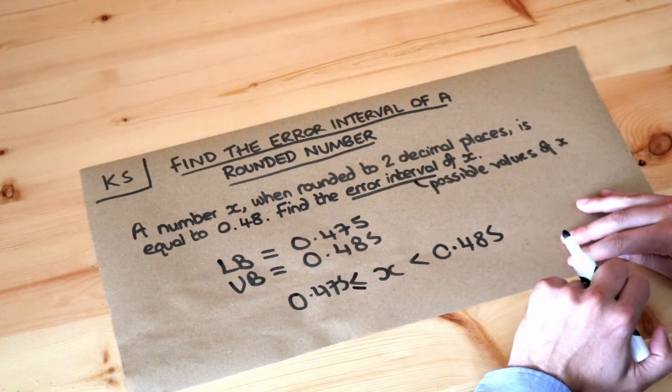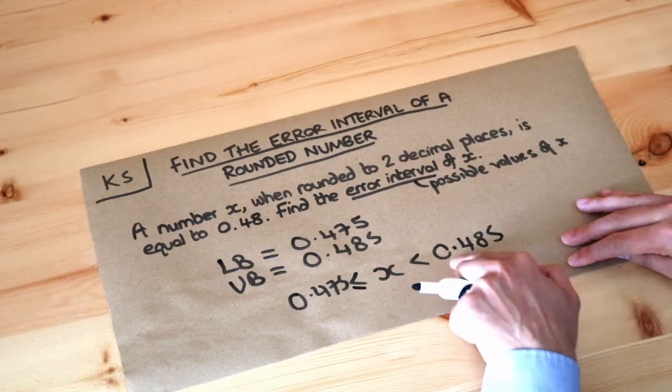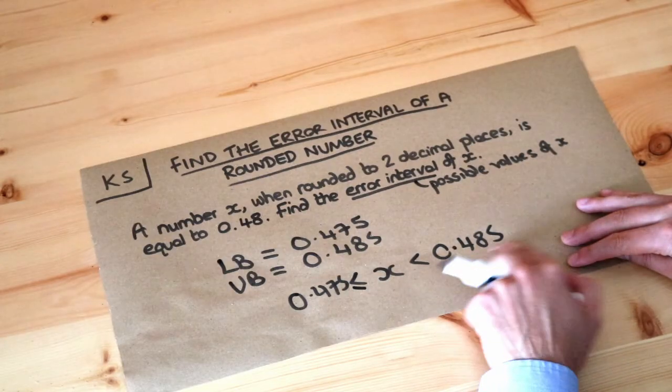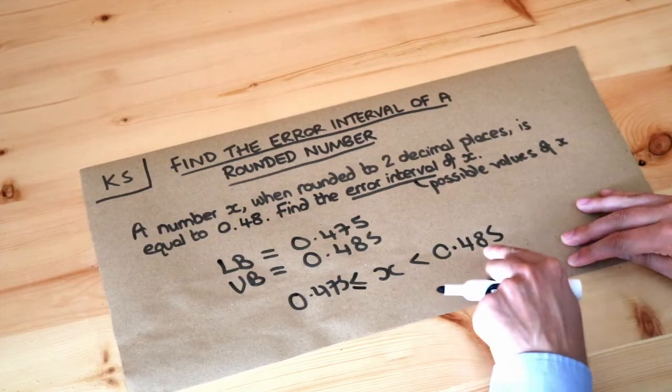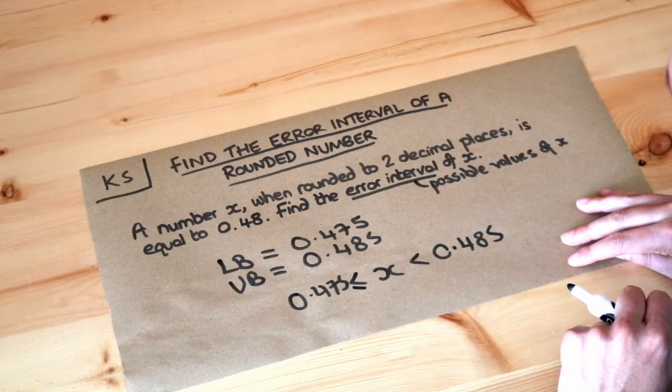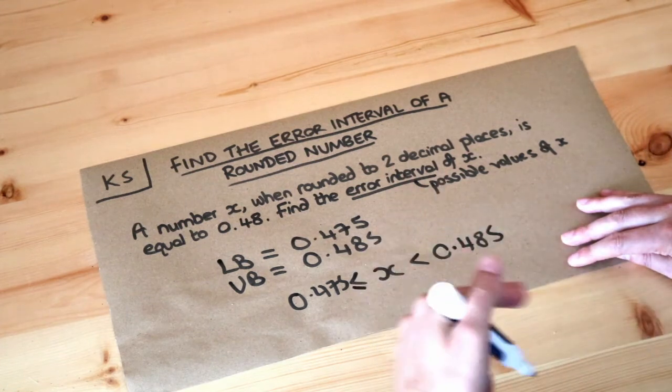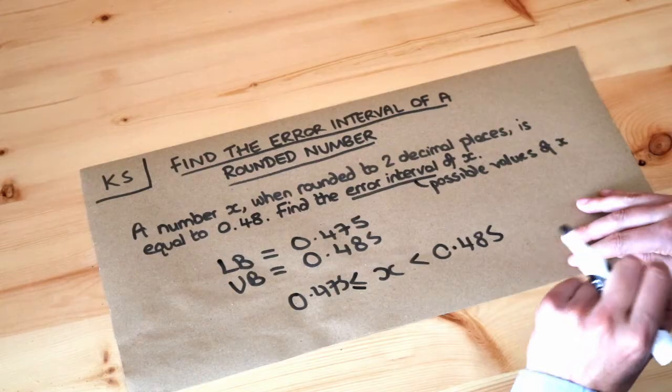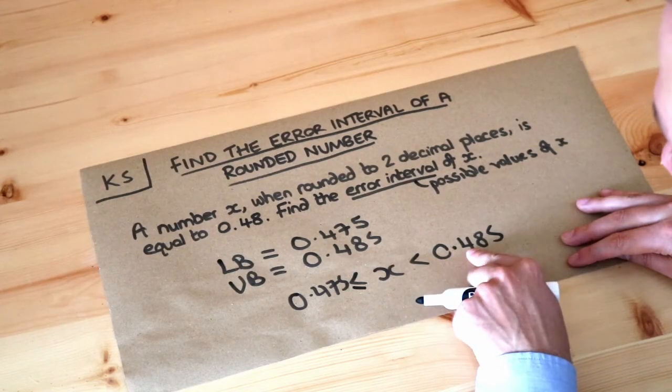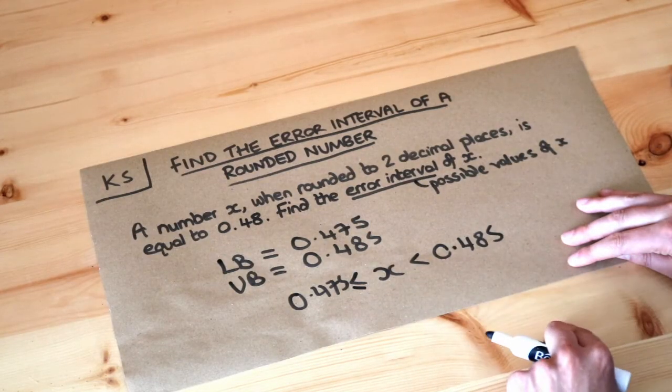But could x be 0.485? Well no because 0.485 would actually round to two decimal places to 0.49. So we want any value of x that's just below 0.485, effectively 0.4849 recurring. So therefore we don't want to include that value but we want to include every value up to that value even if not including.